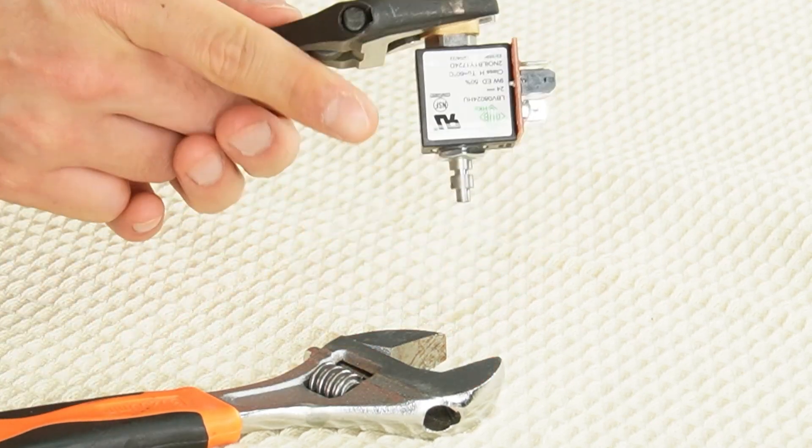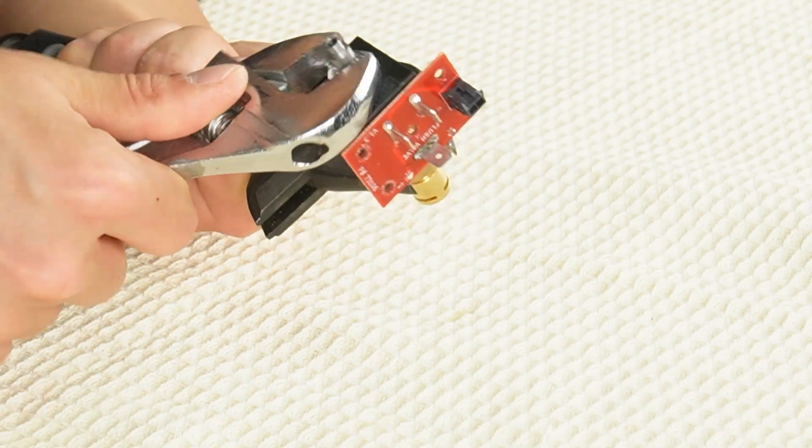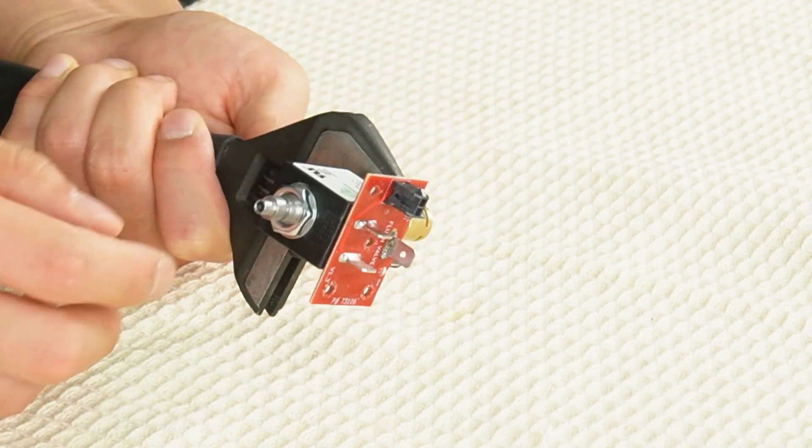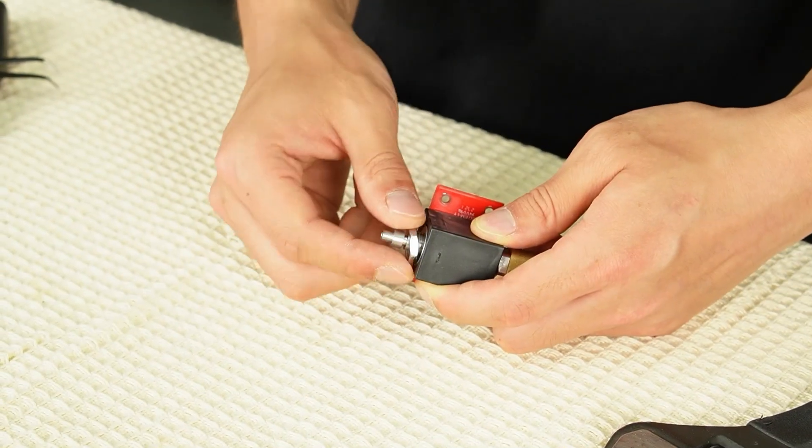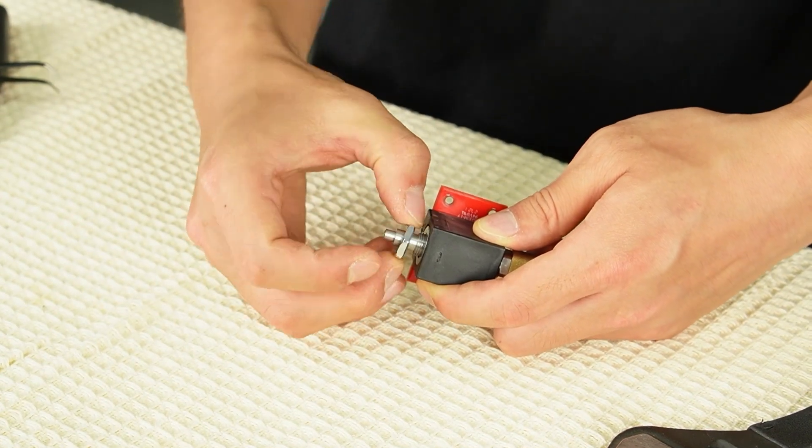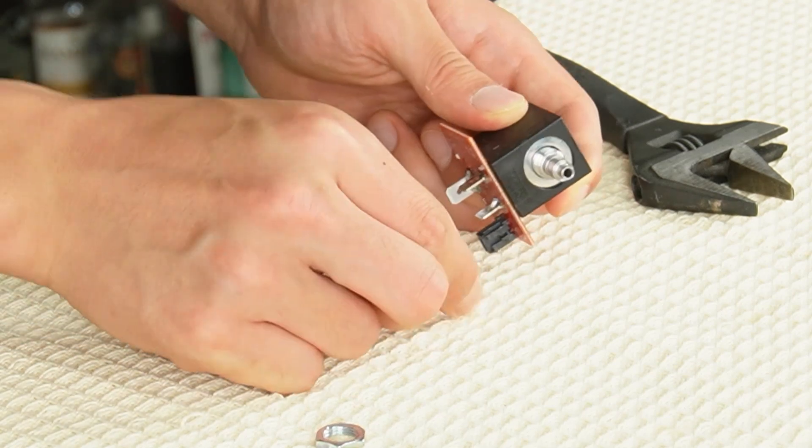Use the 14mm wrench to loosen the bottom nut by turning it counterclockwise. Use your fingers to remove the nut. There is a thicker washer between the coil housing and the nut.